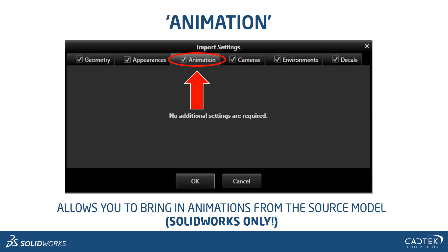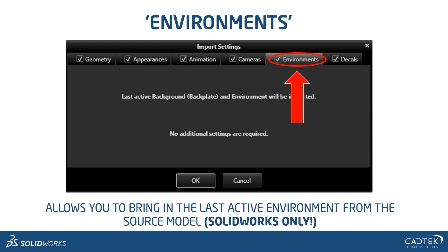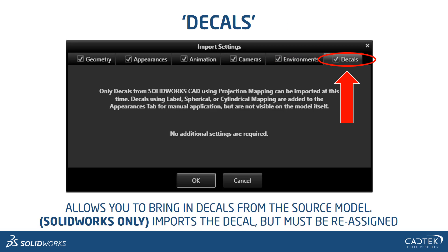There's also an option that will bring in any animations or motion studies you've got within SOLIDWORKS. The camera selection will allow you to bring in the last active camera from SOLIDWORKS — so not all cameras, just the last active one. So if you've saved your SOLIDWORKS model looking from a certain angle, that will be brought in as your default viewing angle in Visualize. Likewise with environment — the last active environment from SOLIDWORKS will get transposed into SOLIDWORKS Visualize.